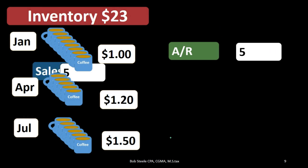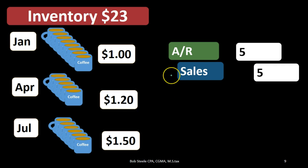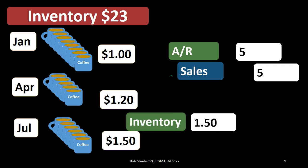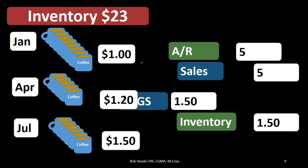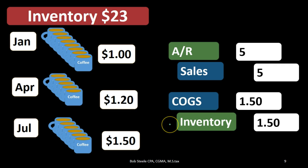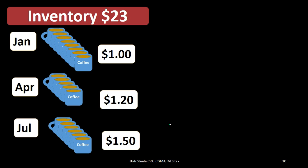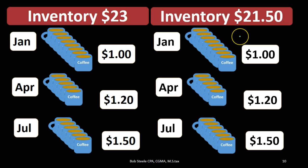Under LIFO, we still sell the mug for $5 — the sales price isn't affected by the method — but inventory now goes down by $1.50 rather than $1. Cost of goods sold is $1.50, so the expense is higher, making net income lower. What's left on our balance sheet? We were at $23, giving us $21.50 in ending inventory under the last in first out assumption.